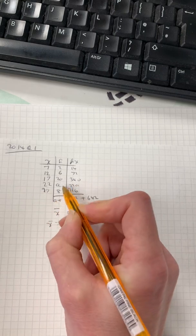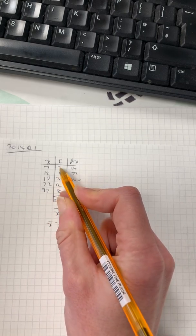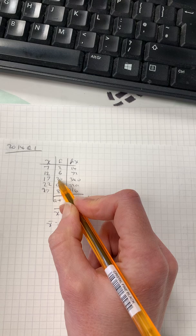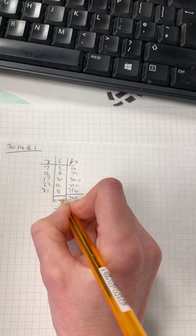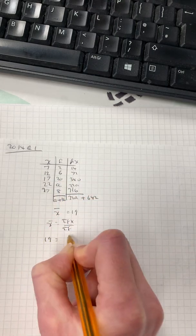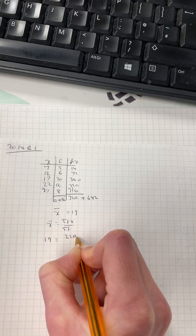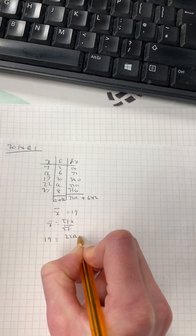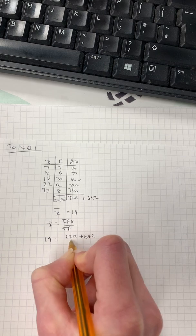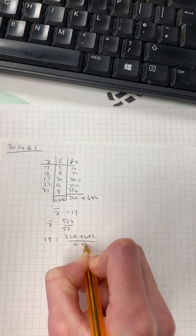Add up the frequencies. Again, don't add up the a. So it's 8 add 2. It's 10, add 26, 36. So 19 equals 22a plus 642 over a add 36.